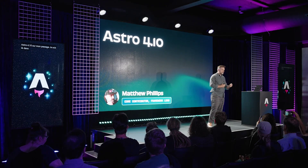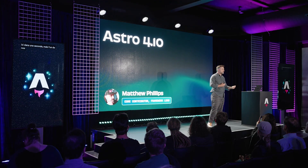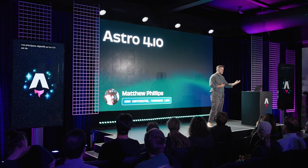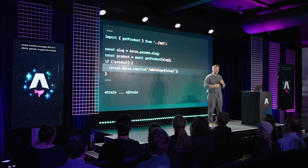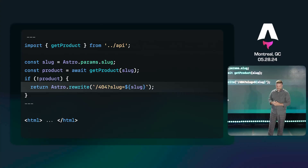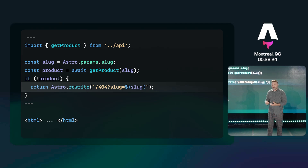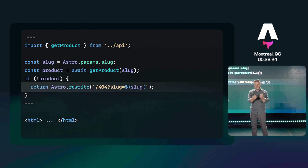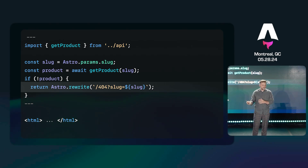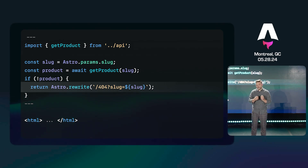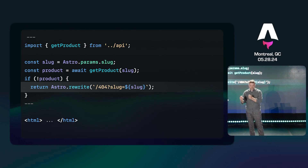One of our main focuses in 4.10 is making it possible to use Astro in ways you never could before. You've probably written this sort of code before — you have some function to call your API, maybe call the database, get the slug from the URL, that product doesn't exist, and you want to reroute the user to the 404 page. Now you can just call Astro.rewrite and pass in the route you want to render.